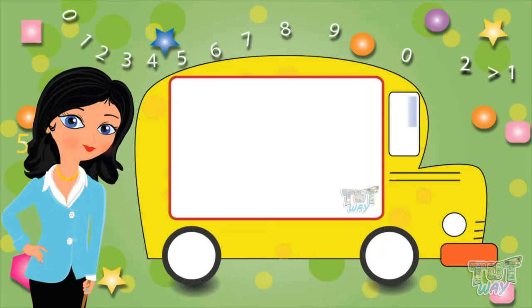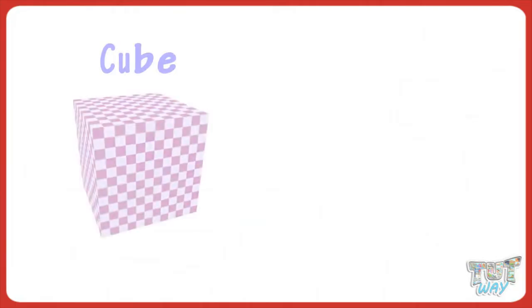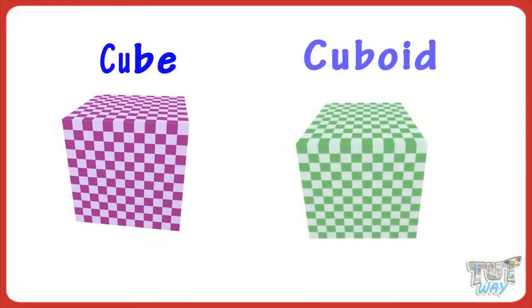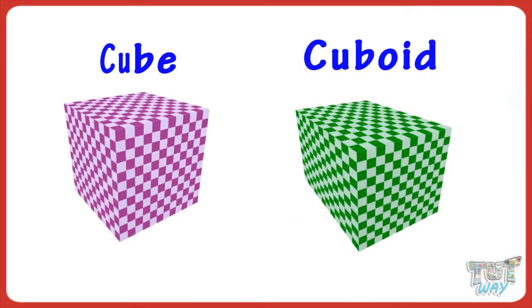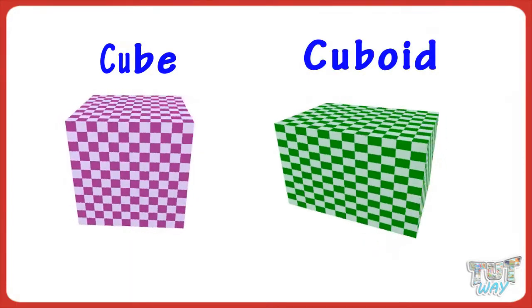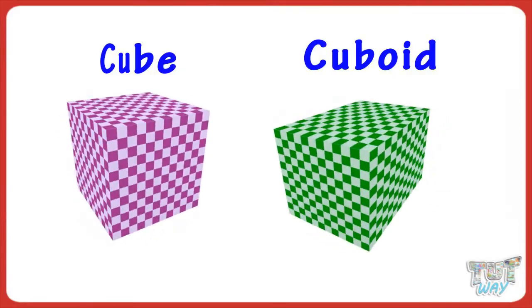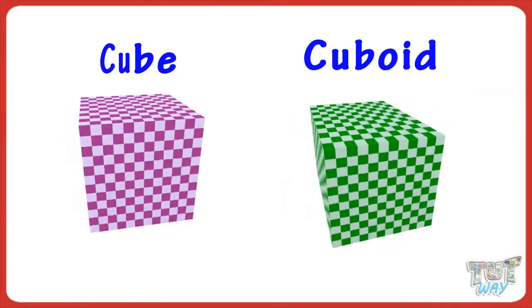Hi kids! Today we will learn about two shapes, cube and cuboid, which are 3D shapes or solid objects.